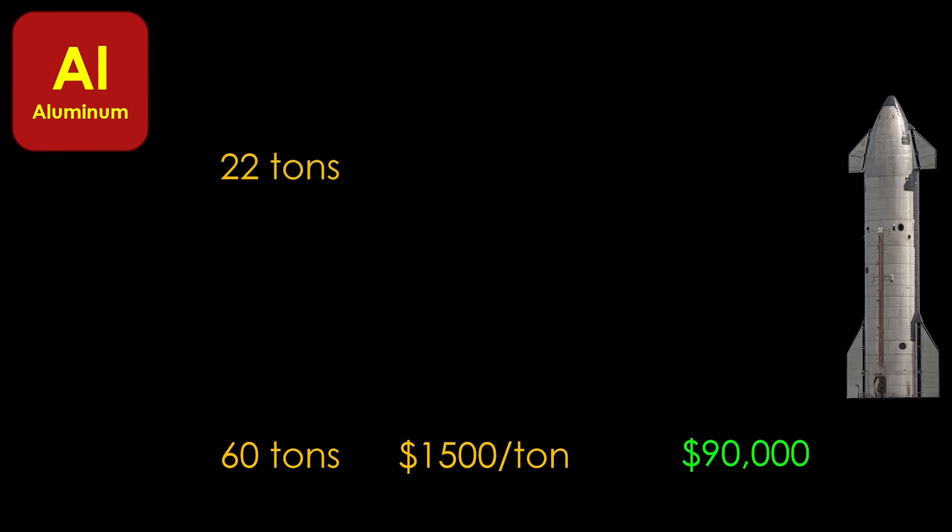Starship would only require 22 tons of aluminum, and it's pretty cheap at around $2,500 per ton, so it would be a little cheaper than stainless. There are good reasons that aluminum is so widely used in aerospace.